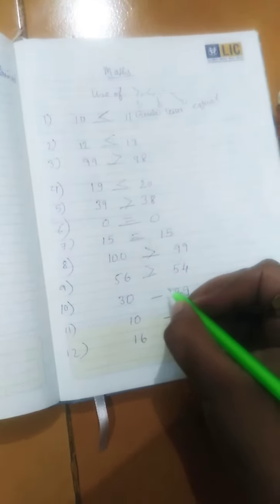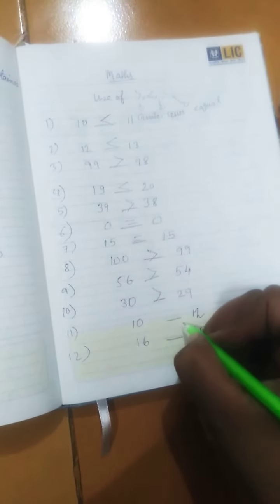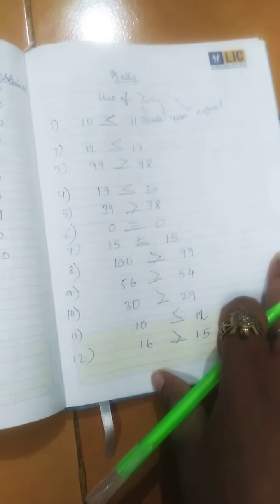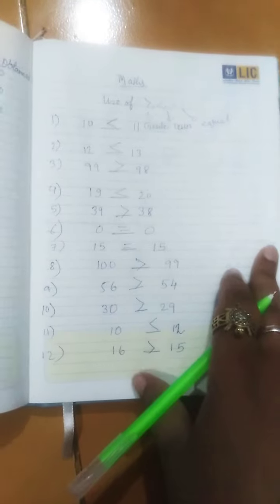30 is greater than 29. 10 is lesser than 12. 16 is greater than 15. These are the signs. I hope you have all done this in your previous classes and these are very easy.